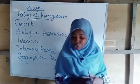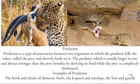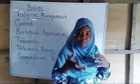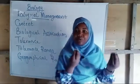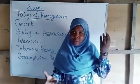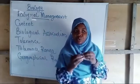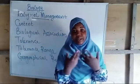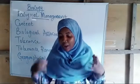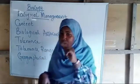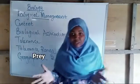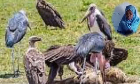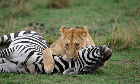The last type of association is predation — an association between two organisms in which the predator kills the other, called the prey. The predator feeds on the prey; the prey is essentially food for the predator. Examples include owl and rats, leopard and antelope, and lion and goat. Predation can occur between organisms of different species or even the same species.